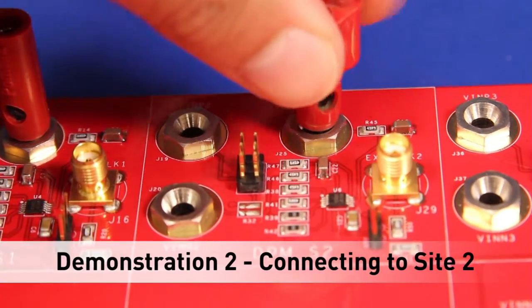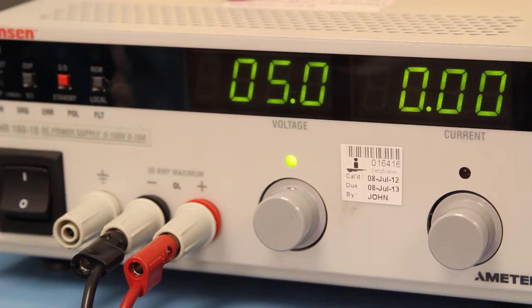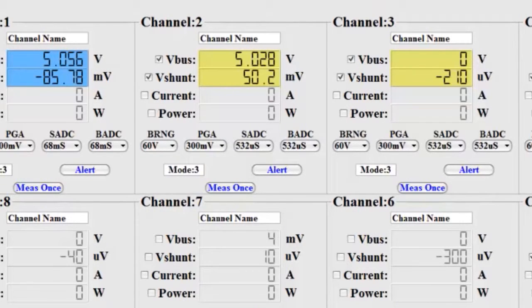I've connected the circuit that I gave you an illustration of to Site 2. I have 5 volts applied to VBUS. If you noticed, I have a 10 ohm shunt resistor and 1,000 ohm load resistor.